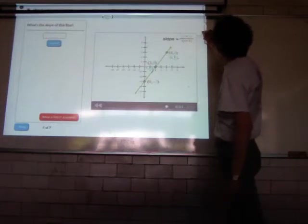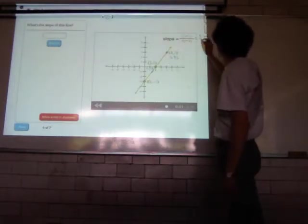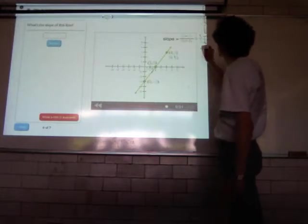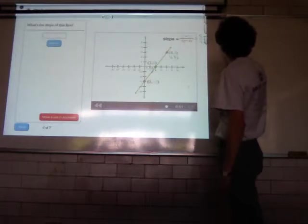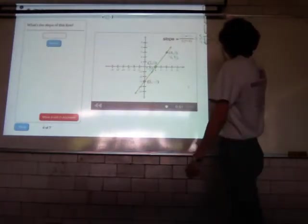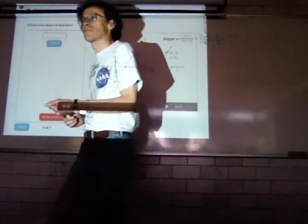Sería entonces, esto igual a y2 es 3, y1 es 0, x2 es 4, x1 es 2, sería 3 entre 2, 3 medios, o 1.5. ¿Bien?